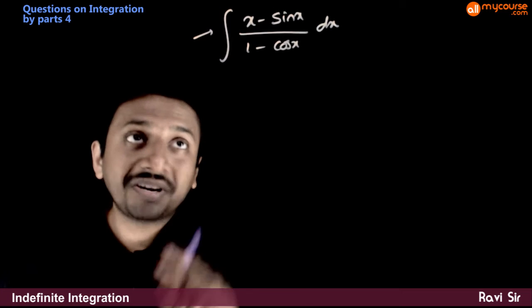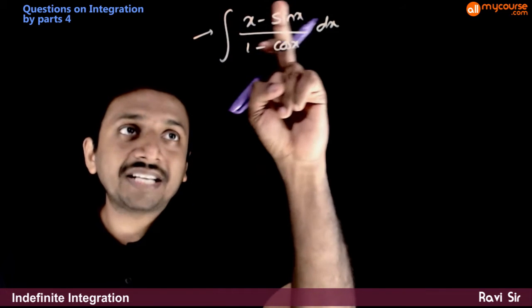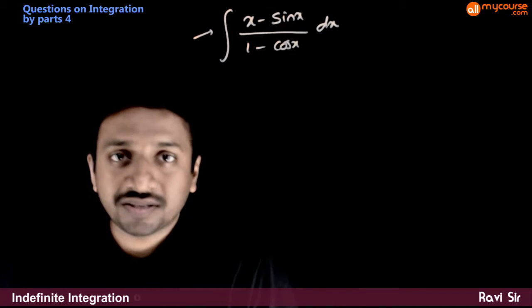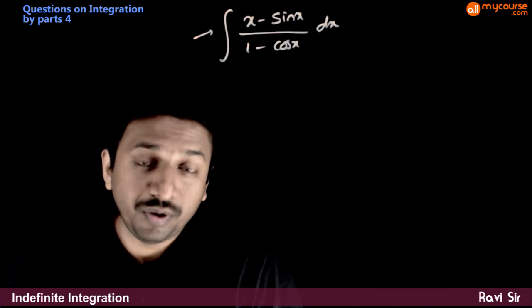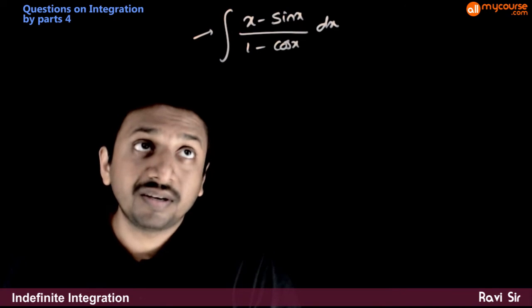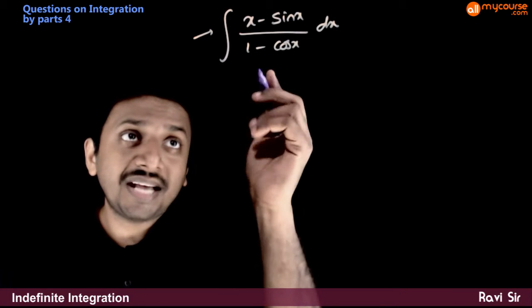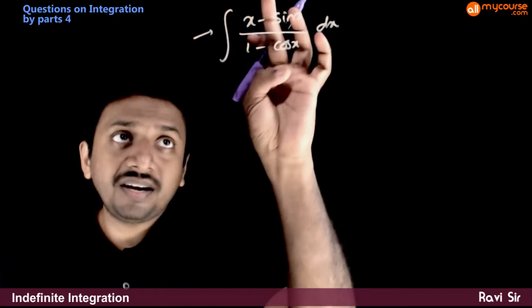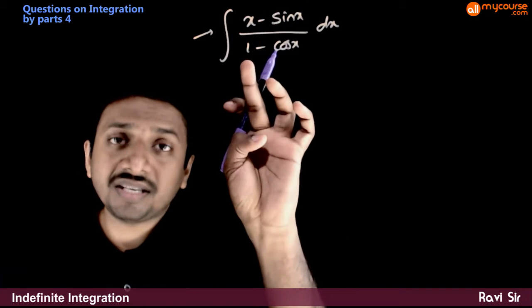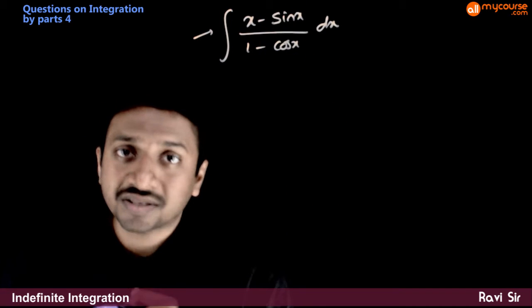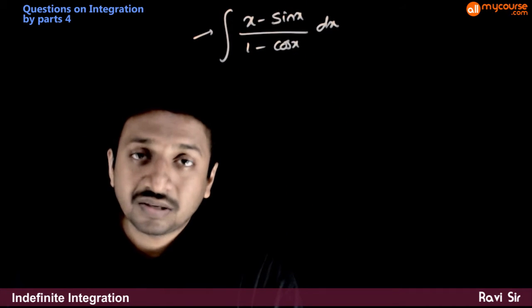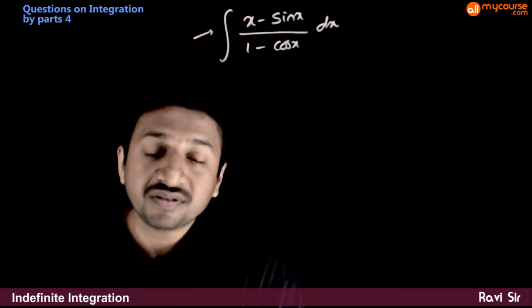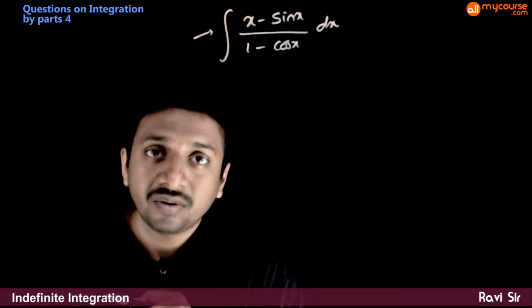In this question you are asked to integrate (x minus sin x) by (1 minus cos x) dx. How do we do this? Here, as you can see, x minus sin x's differentiation is 1 minus cos x. Can I take advantage of this? The answer is no.